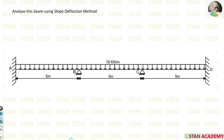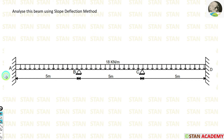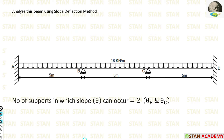Now we are going to start analyzing this beam. It has three spans: AB, BC, and CD. We have a UDL of 18 kN/m acting over the entire beam, with the same loading conditions in each span. Points A and D have fixed supports, while B and C have hinged supports. In the slope deflection method, only fixed supports have no slope; hinged and roller supports will have slope. So we have two supports where slope can occur: B and C.